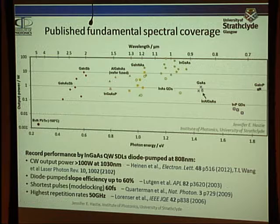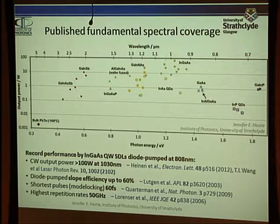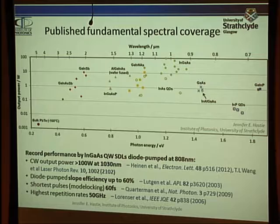This slide from Jennifer Hastie at the Institute of Photonics in Strathclyde shows the wavelength span of VECSEL or OPSL structures. All direct transitions, they run from around 670 nanometers up to about 5 microns, and you can generate second harmonics or sub-harmonics. A notable result from our group is the highest ever power out of a single chip — 100 watts — published by our German collaborators and by Amy Wang within a month of one another.